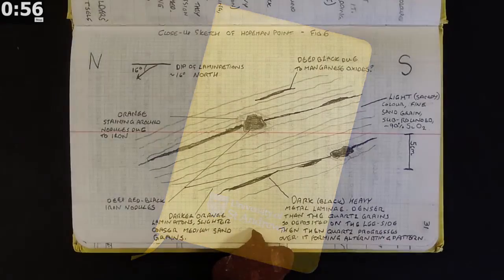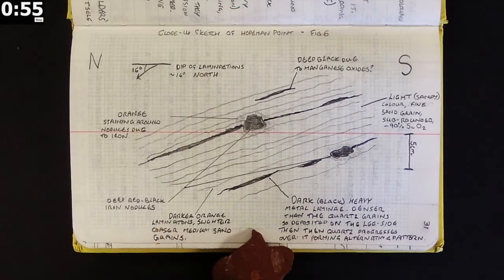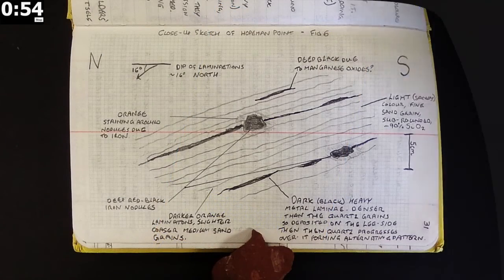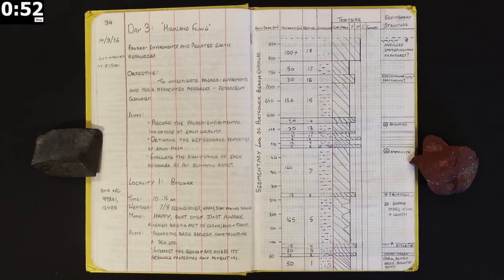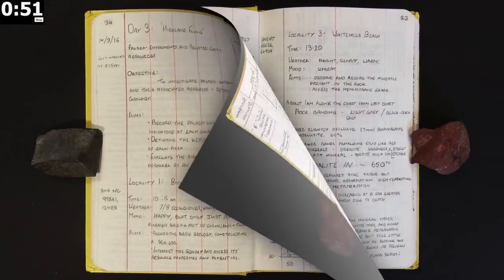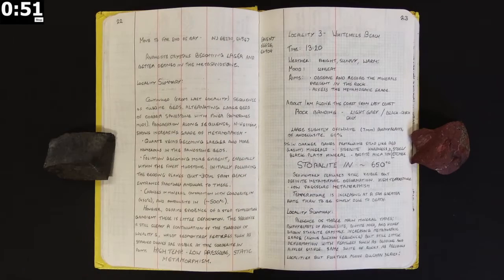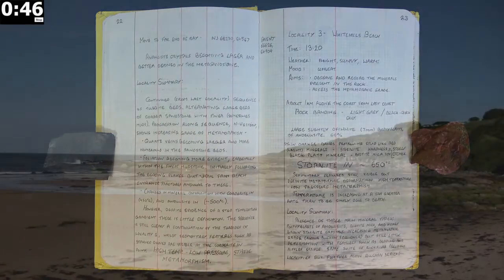A geologist's field notebook is where they record observations made and data collected in the field. This could be in the form of sketches, graphic logs, or just simple notes. It is important a notebook has a clear and consistent layout so it can be easily referred back to in the future.